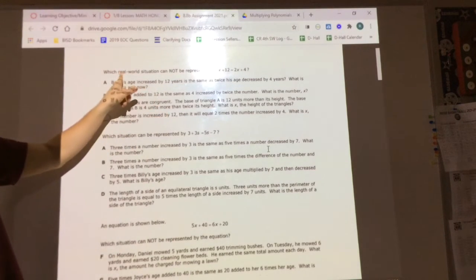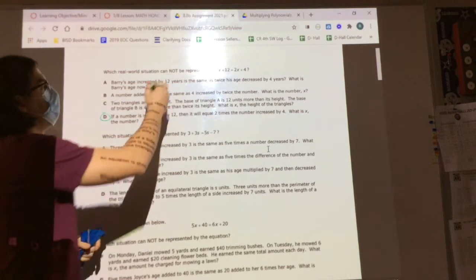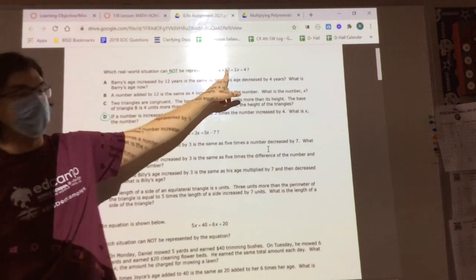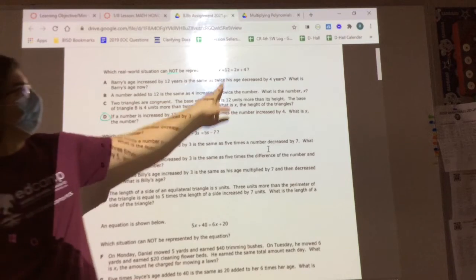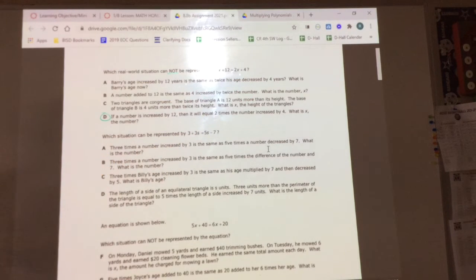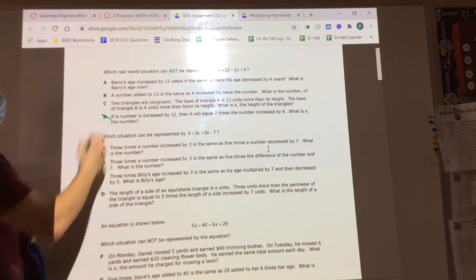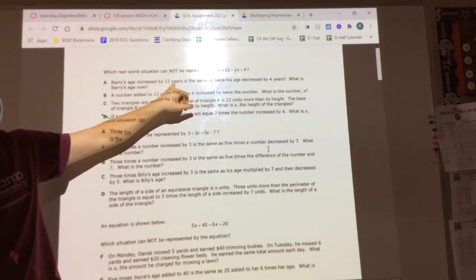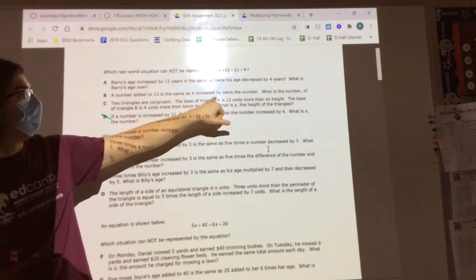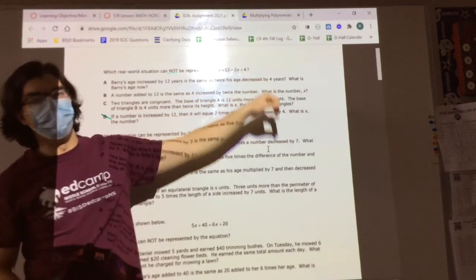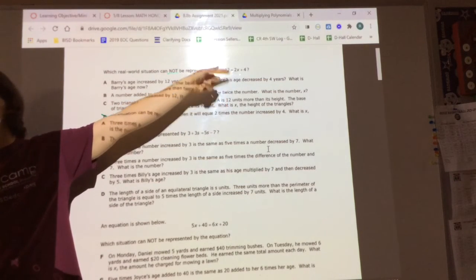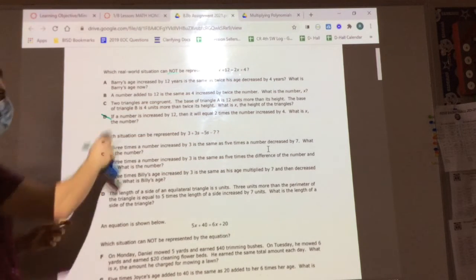Okay. So again, I want to point this out to you. It says, which real world situation cannot be represented by that? Well, this one says if a number, so any random number X, is increased by 12, that's X plus 12, then it will equal 2 times the number increased by 4. So can we agree that D works? Yeah. So D is not the right answer. I think it's A. Let's go back to A. Barry's age increased by 12 years is the same. So Barry's age increased by 12, that works, is the same as his age decreased by 4 years. What does it mean to decrease something? So why is this one not right then? That says adding, right? Alright, good. The correct answer for that one should be A.